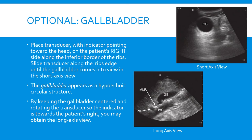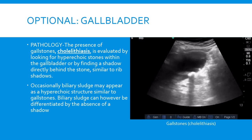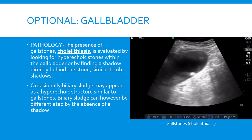The last structure we're going to talk about is the gallbladder. To find it, place the transducer on the patient's right side along the inferior border of the ribs and slide it along the edge until the gallbladder comes into view. With the indicator pointing towards the patient's head we find the gallbladder in the short axis view, where it appears as a circular hypoechoic structure. We can then rotate the probe 90 degrees with the indicator pointing towards the patient's right side to get the long axis view. Gallstones appear as hyperechoic structures within the gallbladder with a shadow behind them, similar to a rib shadow. Biliary sludge may also appear hyperechoic but can be differentiated from a gallstone because it will lack that posterior shadow.